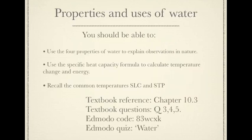Here's a summary of what you should be able to do after watching this video. You should be able to use the four properties of water we just discussed to explain observations in nature. You should be able to explain why those four properties of water exist — it's always to do with hydrogen bonds. You should be able to explain observations in nature and use the specific heat capacity formula to calculate temperature change and energy. The textbook reference is chapter 10.3, and the minimum questions to complete are questions 3, 4, and 5 from chapter 10 of the Heinemann textbook.